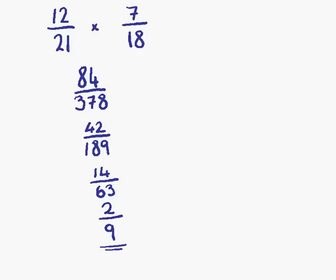It is possible to do this first method a little bit quicker. We could have gone straight to our final answer by noticing that 42 goes into both 84 and 378: 42 goes into 84 twice, and 42 goes into 378 nine times. So we could have missed out the intervening steps by simplifying in one go. This is not the best method, however — we're going to look at method 2.